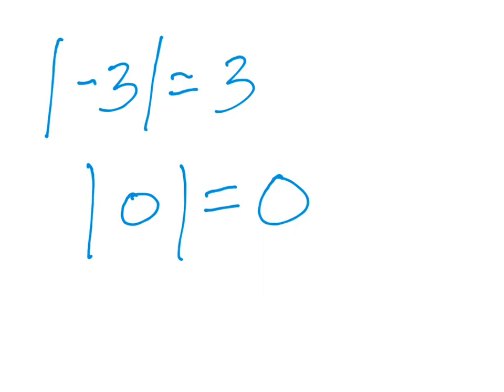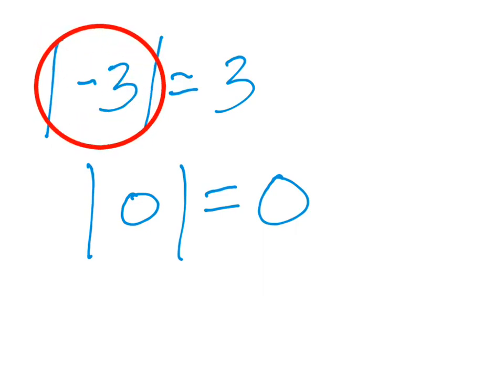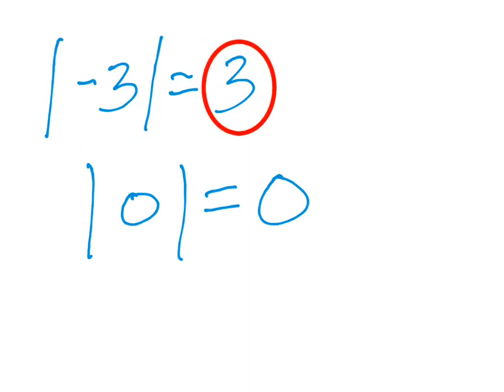Don't confuse this: you can take the absolute value of a negative number, but the absolute value itself can never be equal to a negative number. It will never be equal to a negative number.